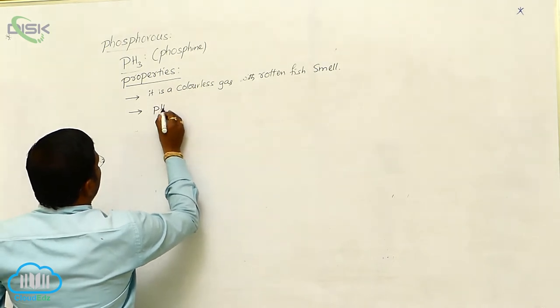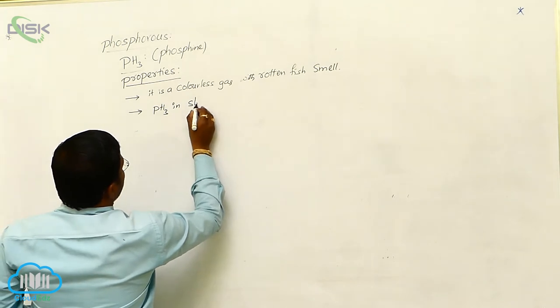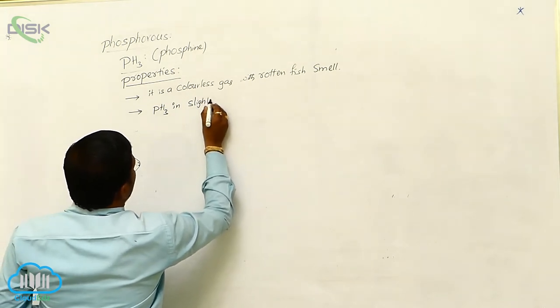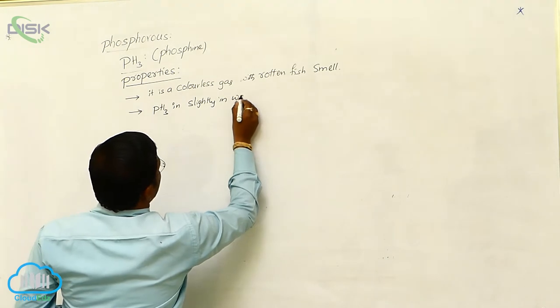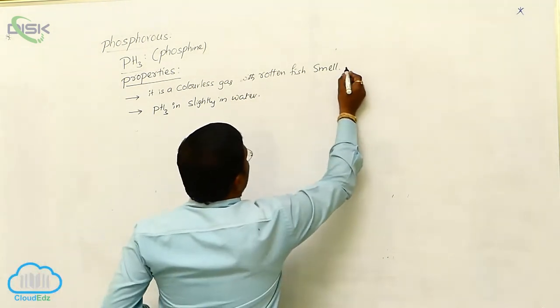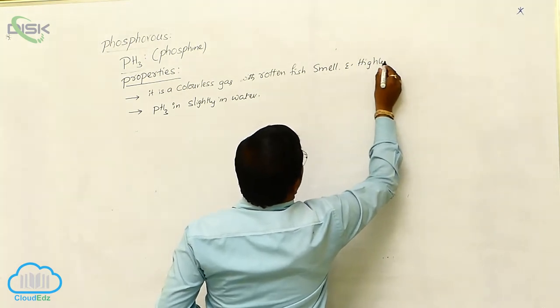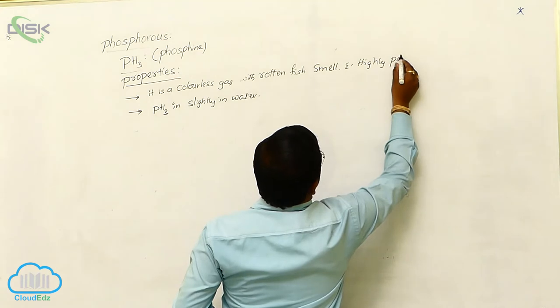Here, phosphine is slightly soluble or less soluble in water, and it is highly poisonous.